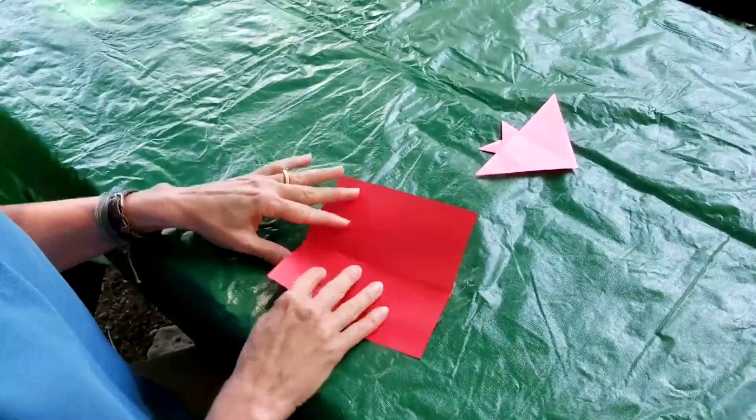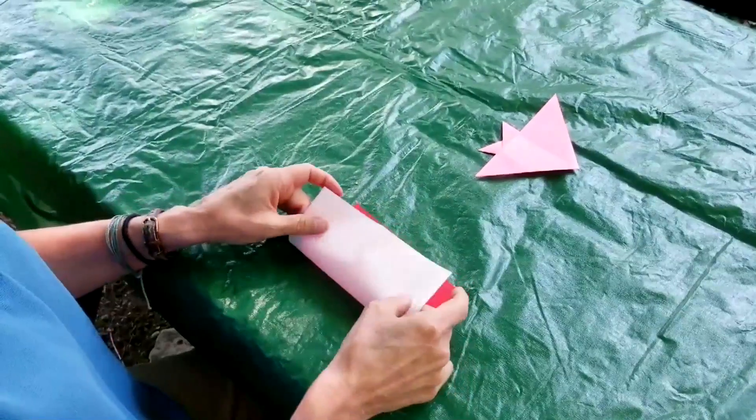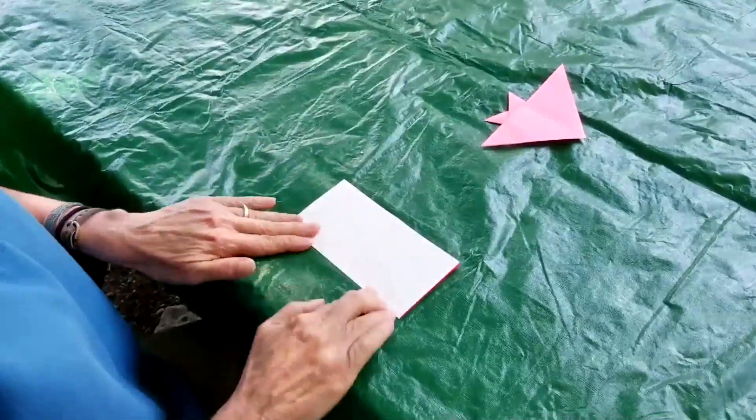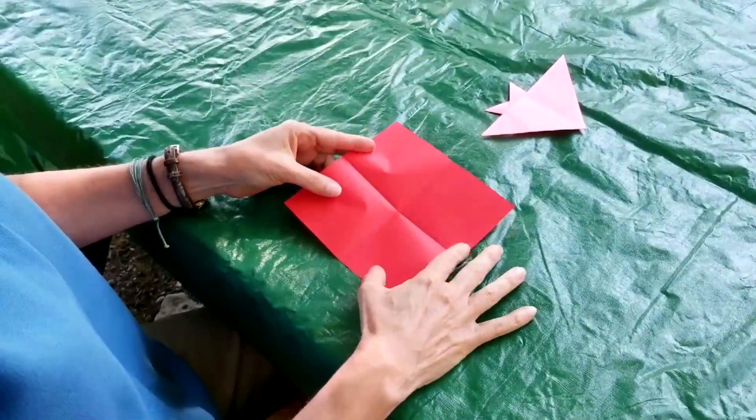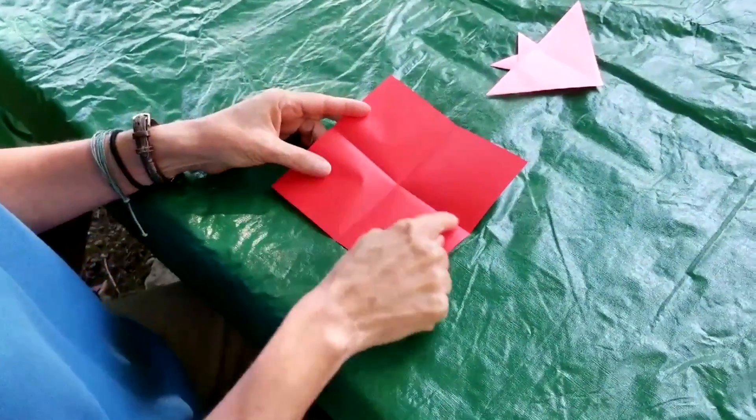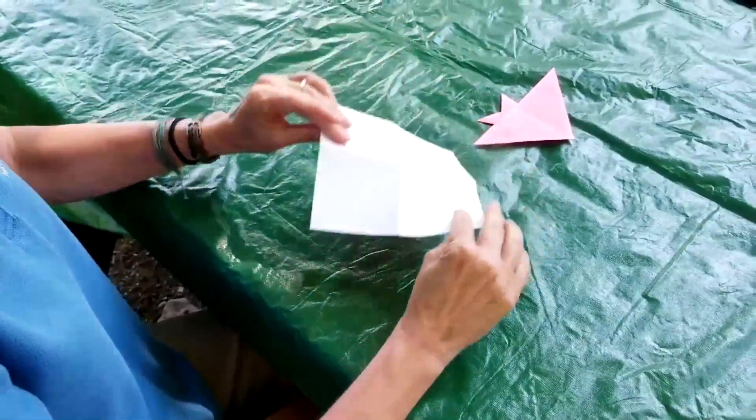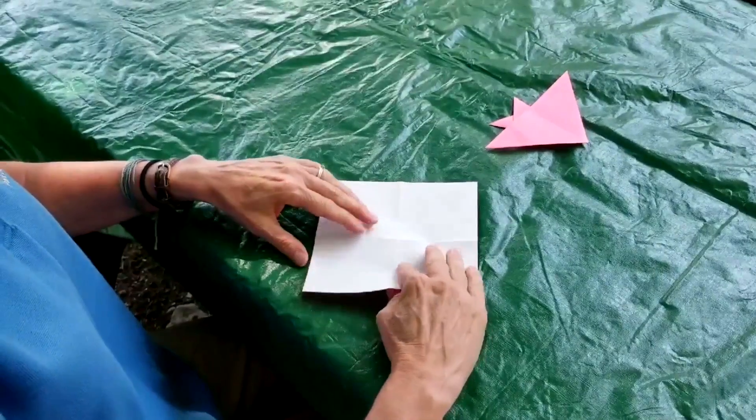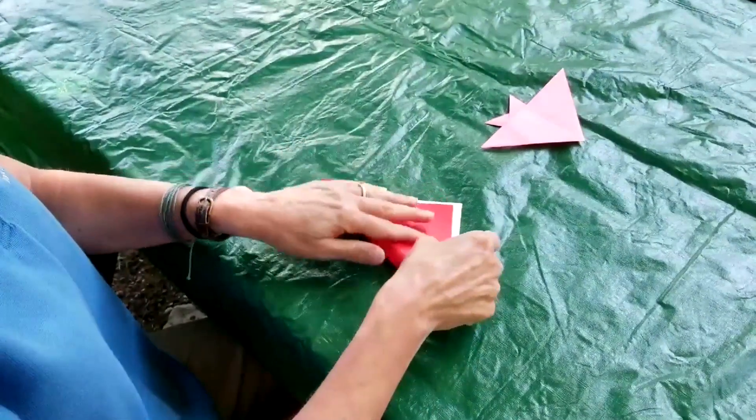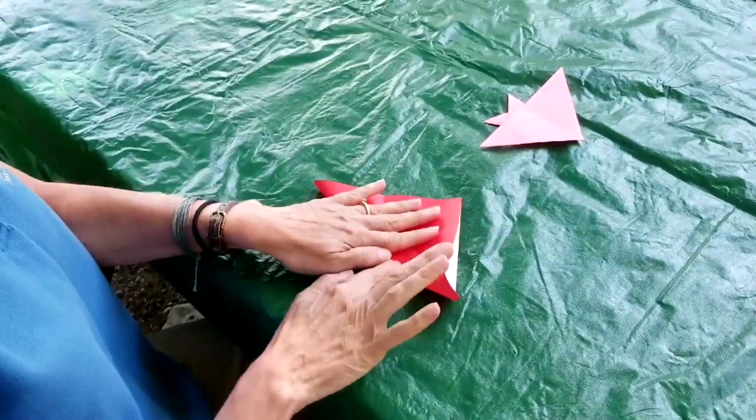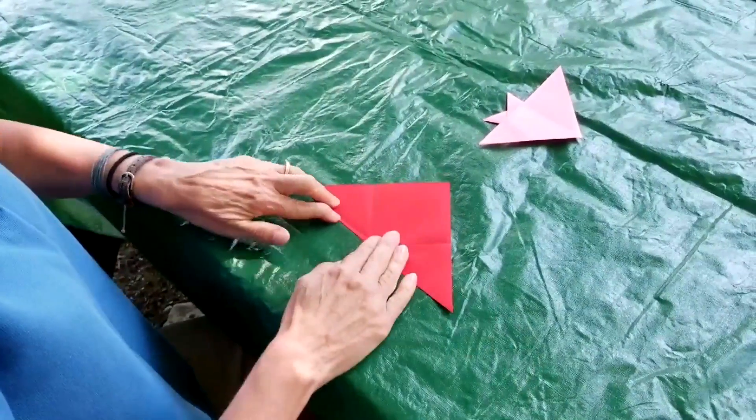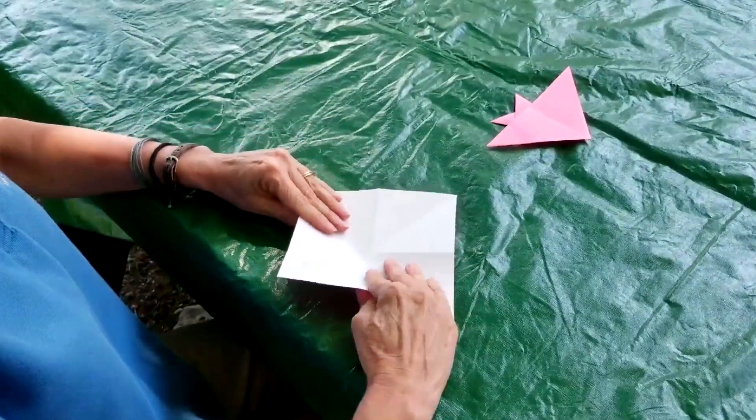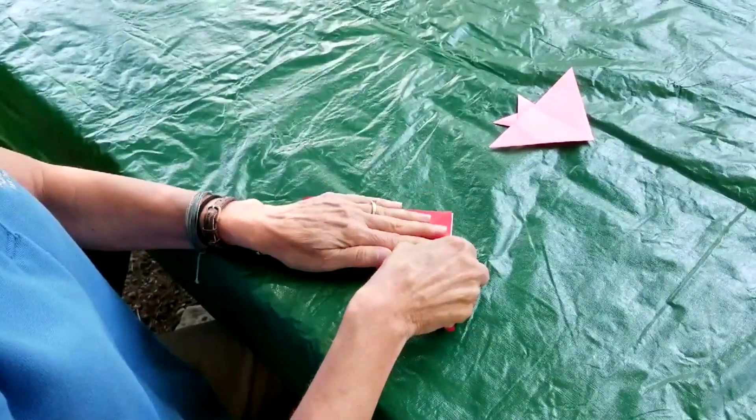Open it up, turn it, and fold it again in half. Alright, so now you can see the fold lines. We're going to flip it over so the white side is up. And now take one corner and fold it up to the other corner, making good creases. And then turn it and fold the other two corners together.